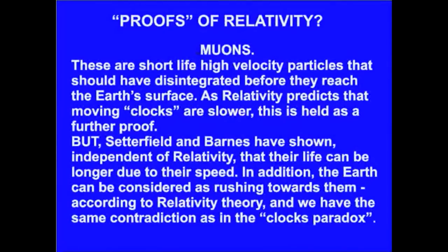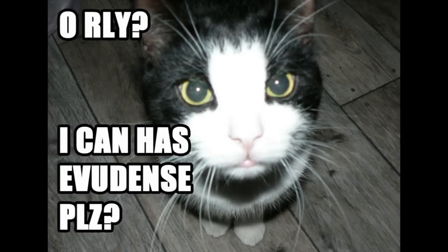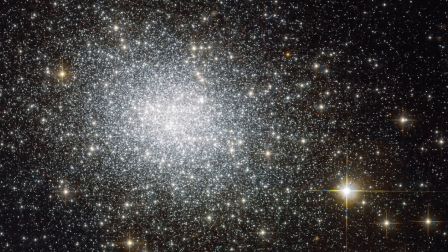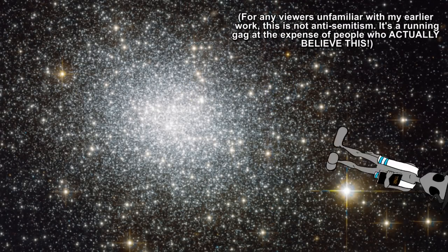Muons. These are short-life, high-velocity particles that should have disintegrated before they reach the Earth's surface. As relativity predicts that moving clocks are slower, this is held as a further proof. But Sutterfield and Barnes have shown, independent of relativity, that their life can be longer due to their speed. I've looked for a peer-reviewed paper by Sutterfield and Barnes, and I can't even find a reference to it. If you're gonna cite sources, why don't you provide proper references so that I can check for myself? Peers proved conclusively that Jews are from space. See? I can play that game, too.